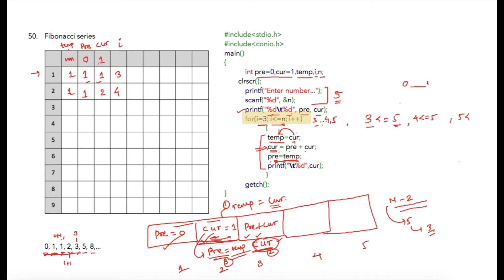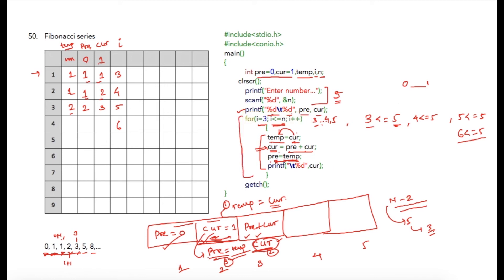The condition 5 less than or equal to 5 is true again, so the program enters the loop. Current (2) is assigned to temp. Then addition of previous and current — 1 plus 2 equals 3 — is stored into current. Previous is then updated with temp, so previous becomes 2. After this, i is incremented to 6 and the condition 6 less than or equal to 5 is false, so the for loop ends and the program terminates.